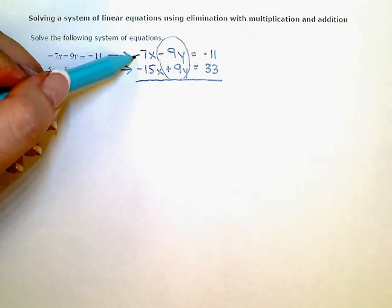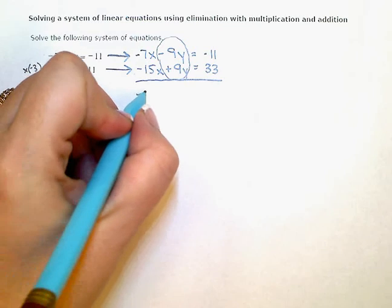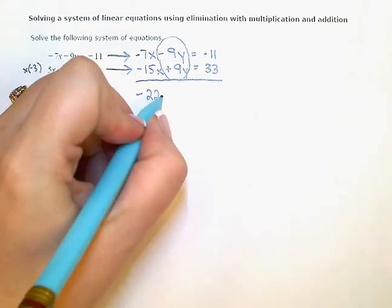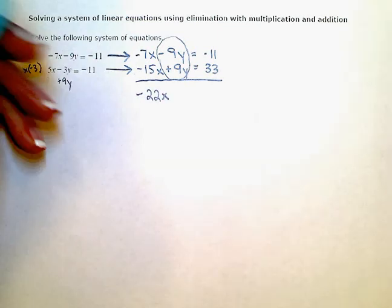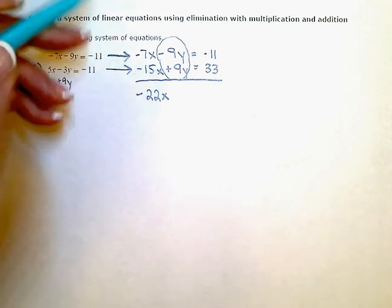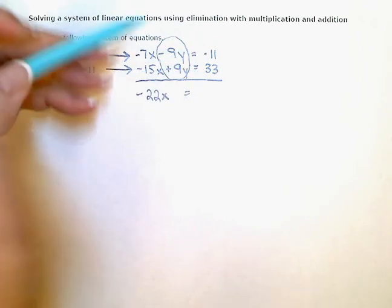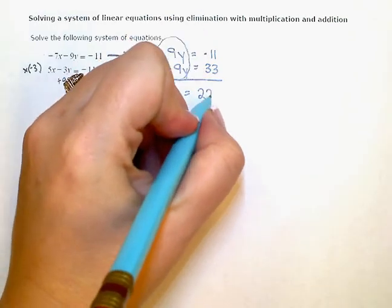So negative 7x plus a negative 15x is going to be negative 22x. The negative 9y plus 9y zeros out. No more y terms. And equals negative 11 plus 33 is positive 22.